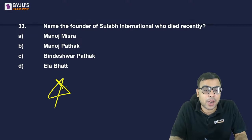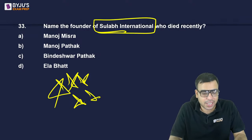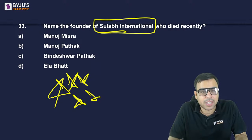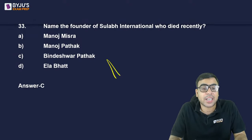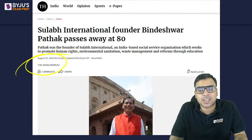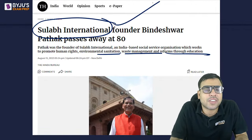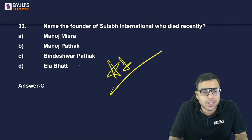Name the founder of Sulabh International who died recently — very important, star-marked. Options: Manoj Mishra, Manoj Pathak, Bindeshwar Pathak, Ela Bhatt. The right answer is C — Bindeshwar Pathak. This was in the news on 5th August. Sulabh International is an NGO focused on sanitation, environment, and waste management. Bindeshwar Pathak was a very famous person associated with this work.